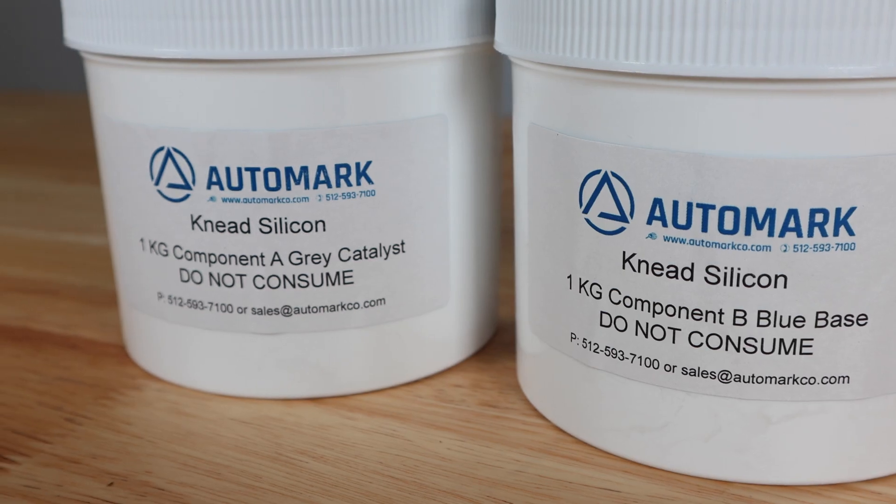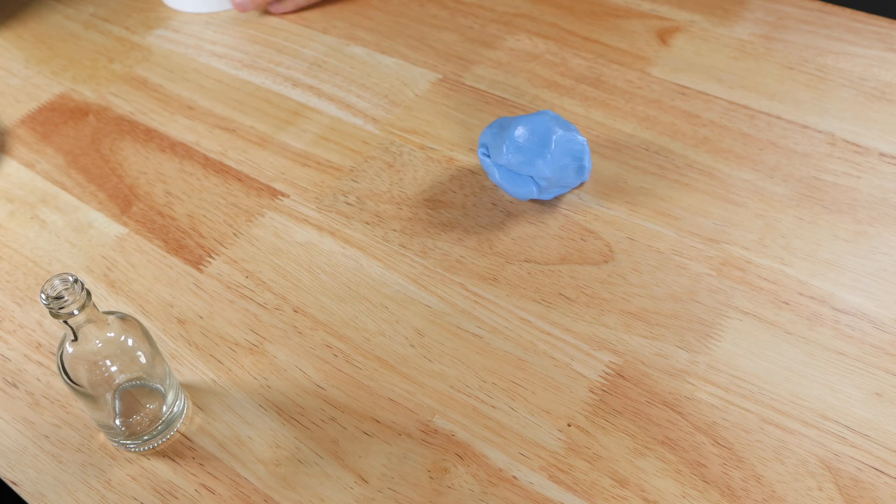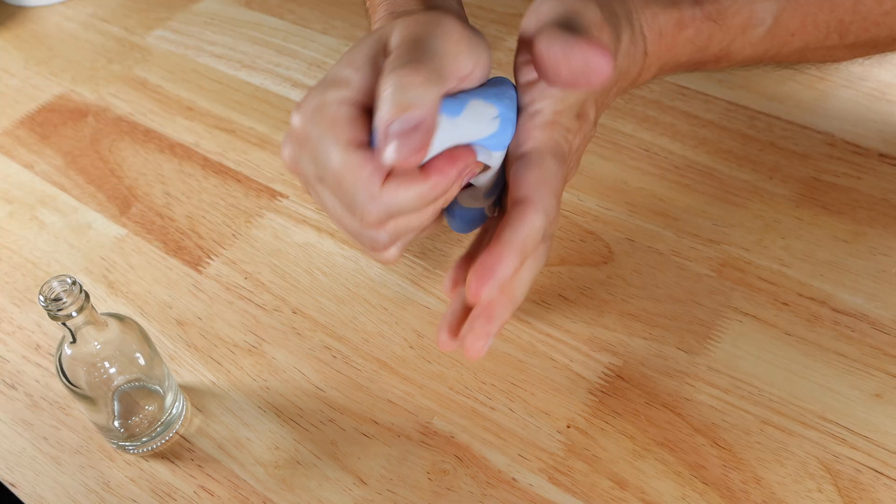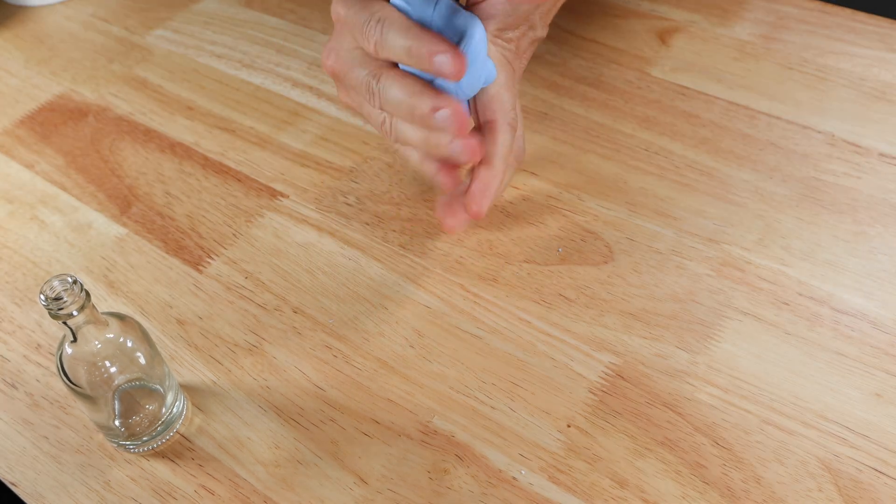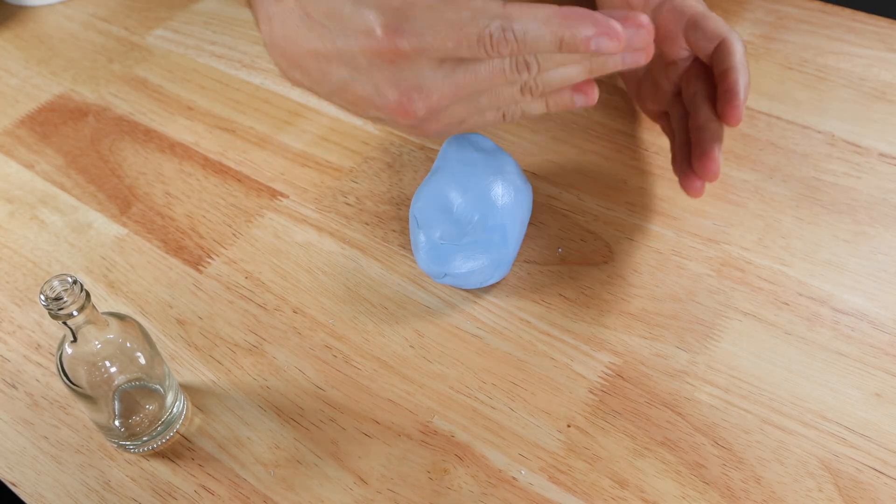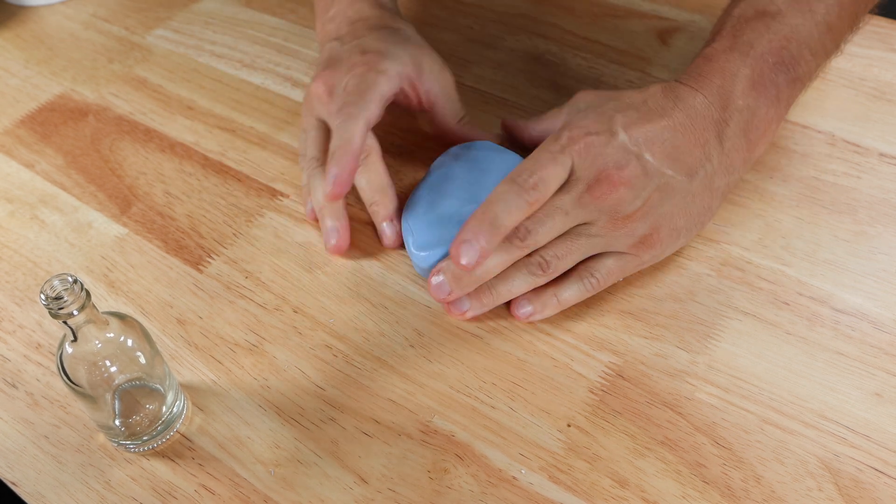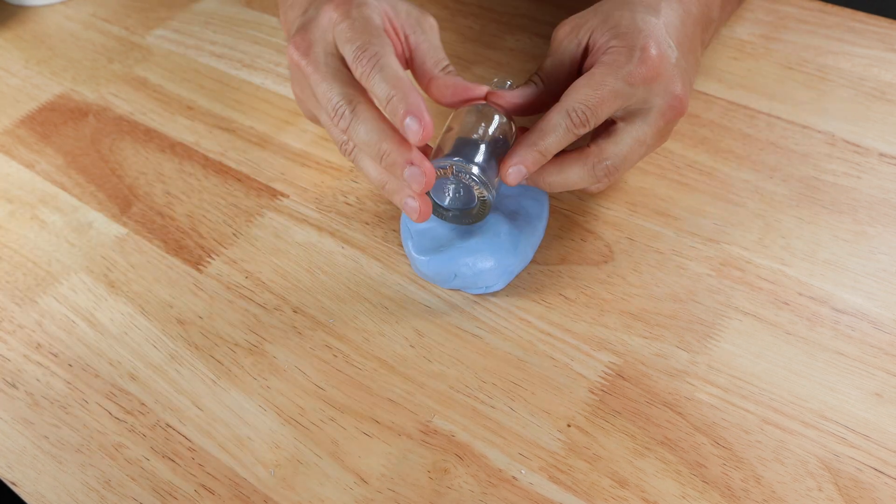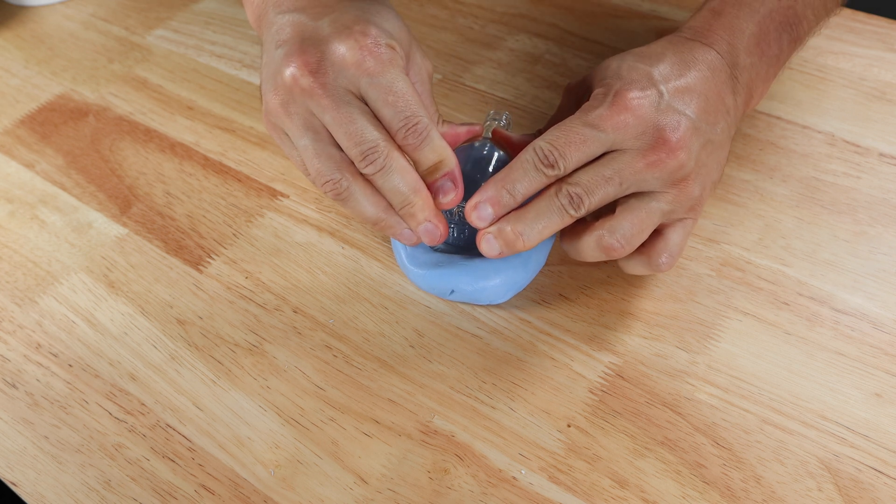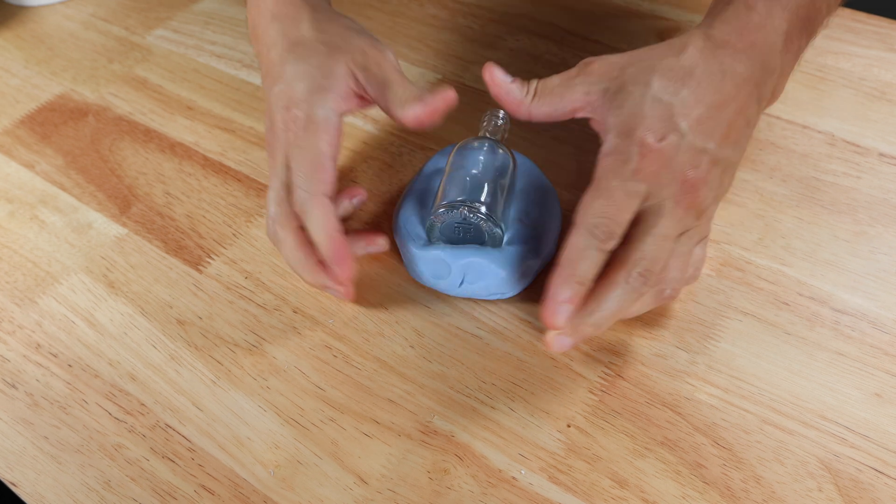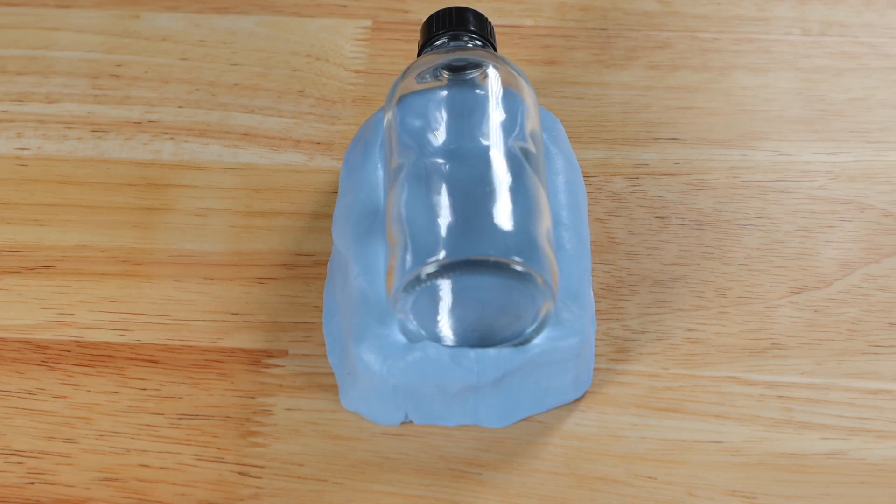Here we are using the knead silicone quick fixture putty to create fixtures for the bottles. We take equal parts A and B and mold them quickly. This putty sets up in just a few minutes. We press the bottle into the putty to secure the bottle for printing. We can hold these in place by molding these onto a Lego part and mounting that onto the machine. For this video we will simply use these without mounting. Both fixture pieces are done.